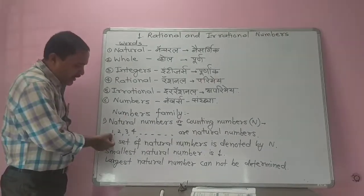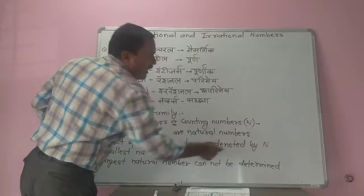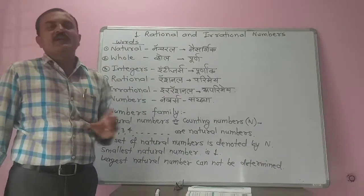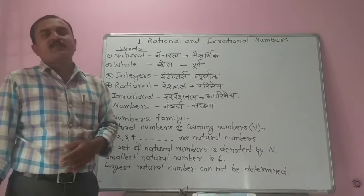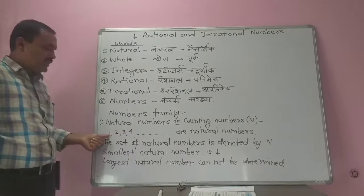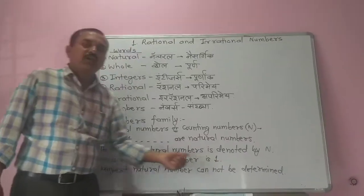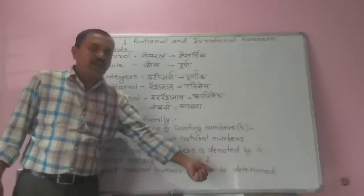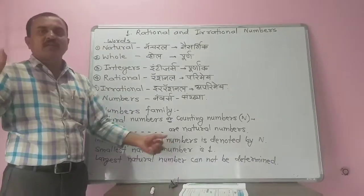The set of natural numbers is denoted by the capital alphabet N. The family of one, two, three, four, infinite numbers. The smallest natural number is one, and the largest natural number cannot be determined.